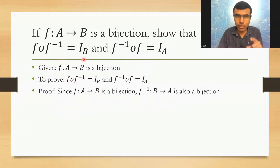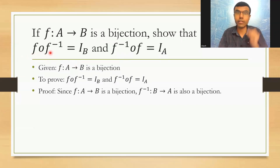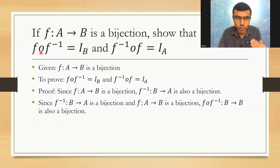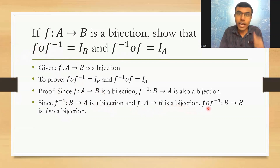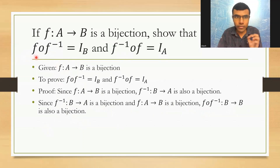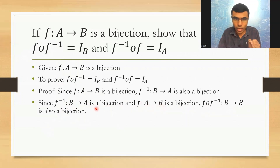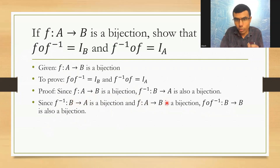First, I'm going to prove that F∘F⁻¹ = I_B. In F∘F⁻¹, first F⁻¹ comes and then F. Since F⁻¹ maps B to A is a bijection and F maps A to B is a bijection, F∘F⁻¹ maps B to B is also a bijection. F⁻¹ goes from B to A, then F goes from A to B, so overall B goes to B.